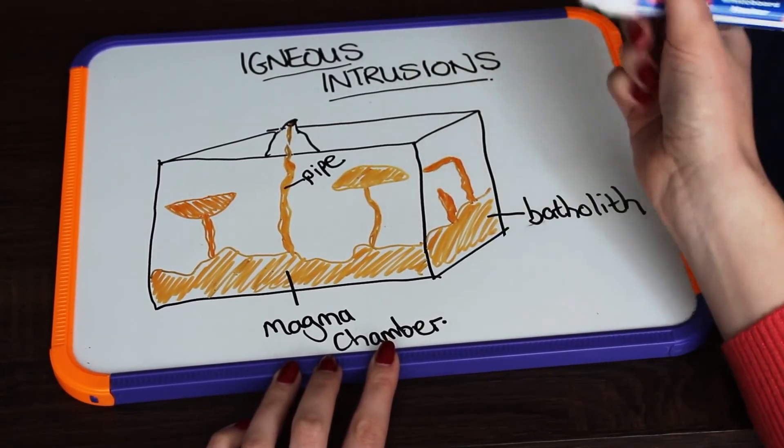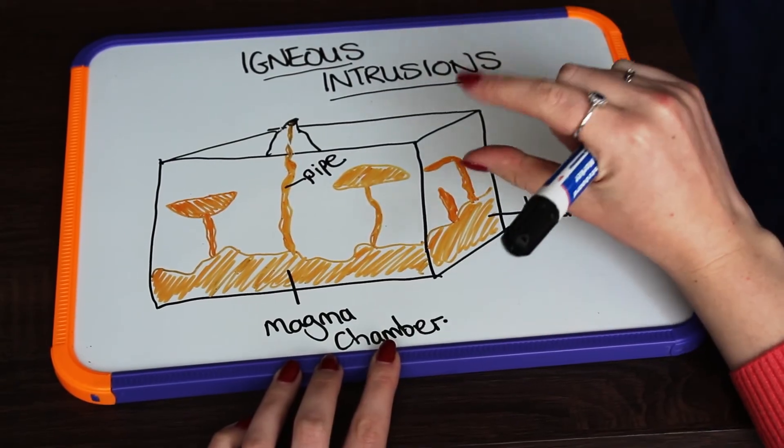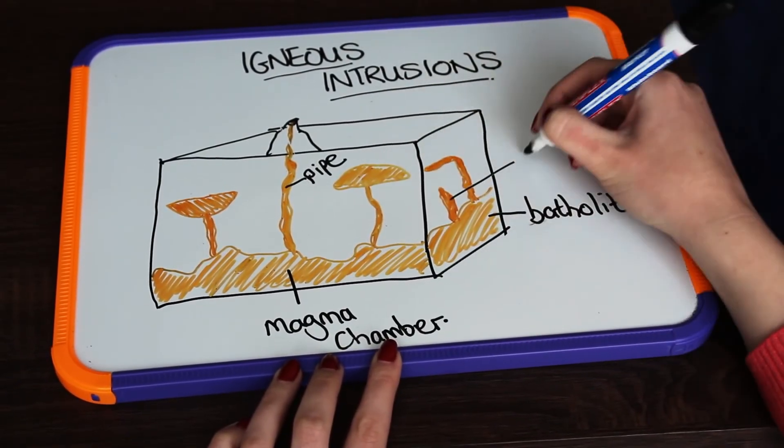Over here we have another vertical igneous intrusion, but it is a lot shorter, and this is called a dike.